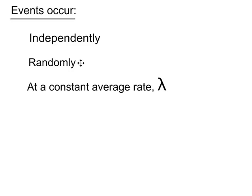Events must occur randomly and at a constant average rate, λ (lambda). This is the parameter of the Poisson distribution — the constant average rate at which something occurs in either space or time.